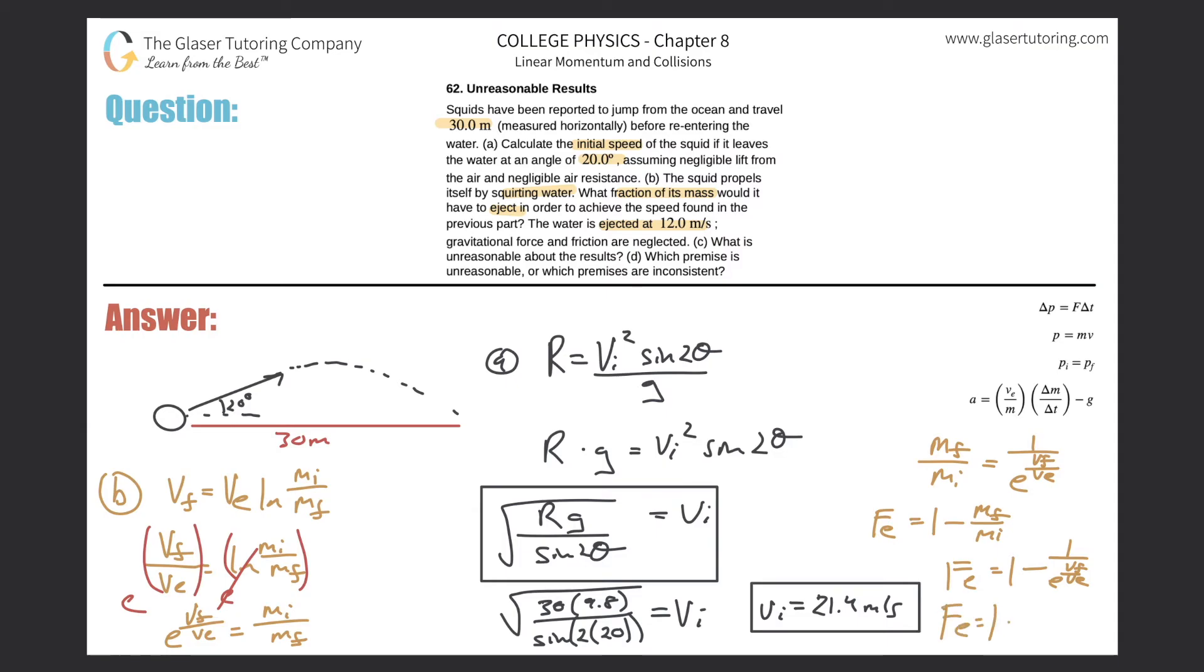Let's plug it on in. F_e is going to be one minus one over e raised to the V_f which was 21.4 all divided by V_e which they told us was 12. Now let's just plug that into the calculator. It's going to be one minus one divided by e to the 21.4 divided by 12, and here it is: 0.832. So f_e equals 0.832, about 83.2 percent has to be ejected.